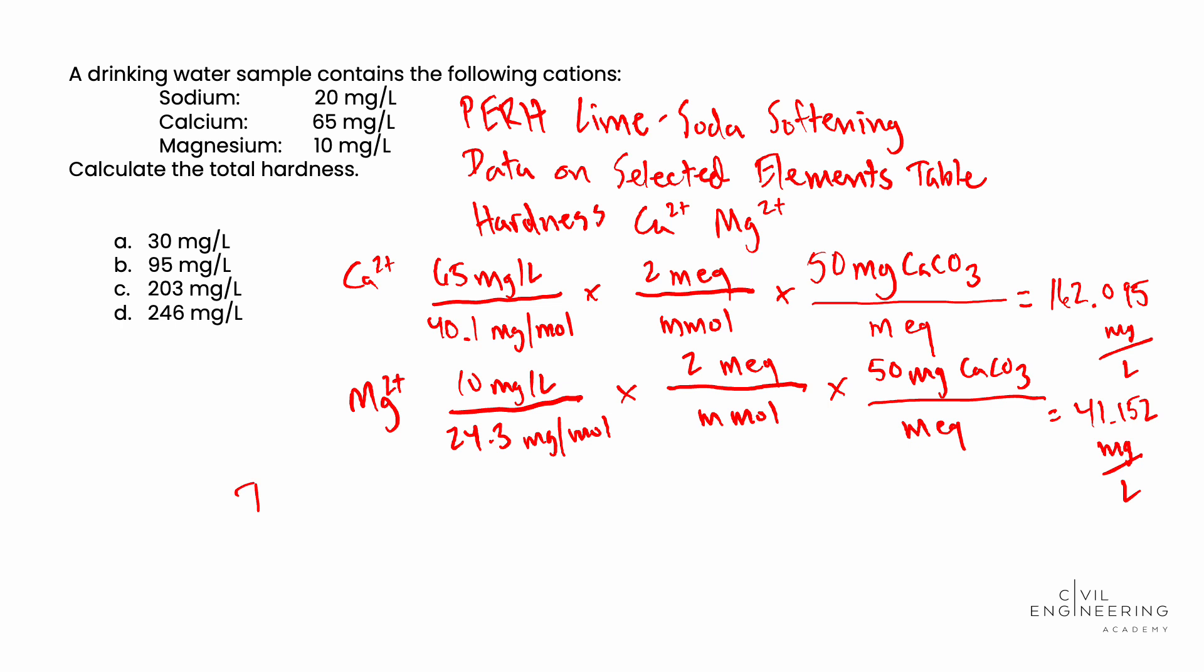We add both of these up to get the total hardness. The total hardness equals 162.095 plus 41.152. Adding this up, we get a total hardness equal to 203.247 mg per liter. Looking at our answer choices, that is closest to answer choice C, and we've successfully solved this problem.